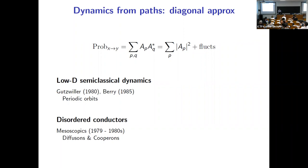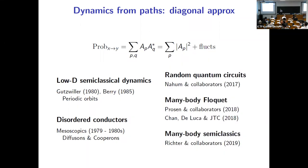In these many-body systems based on quantum circuits, everything is set up so that the diagonal approximation is a controlled treatment, and these fluctuations are either zero after averaging over the random matrix ensemble or otherwise at least under control.